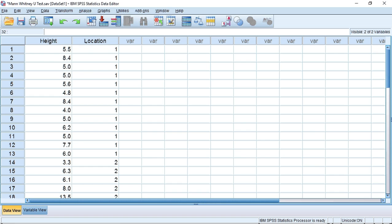I have already entered the data from table 11.1 into SPSS. In column 1, we have the height of each periwinkle, and in column 2, we have the location at which that periwinkle was found.